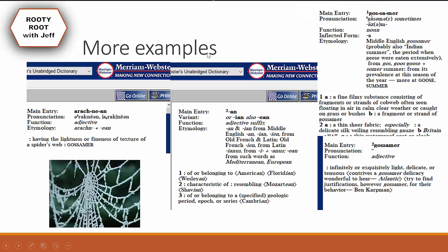The next word, 'arachnian', means having the lightness or fineness of texture of a spider's web — gossamer. The suffix '-an' means of or belonging to, but here we want the definition of characteristic of, because lightness and fineness are characteristics of a spider web. Gossamer means a fine filmy substance consisting of fragments or strands of cobwebs, and also means infinitely or exquisitely light, delicate, or tenuous — which spider webs are.